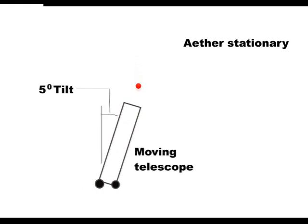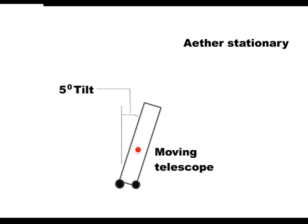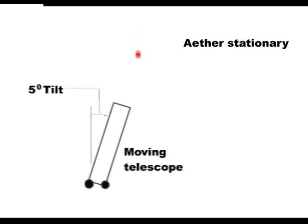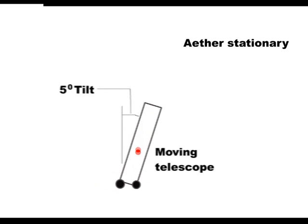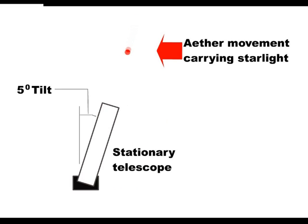Let us assume that the telescope was moving at 5 mph and had to be tipped 5 degrees. This 5 degree tipping, however, could equally be caused by the ether moving at 5 mph carrying the stars around the Earth.